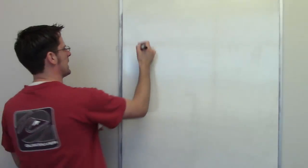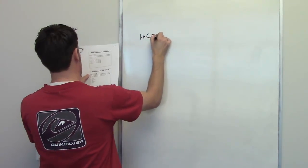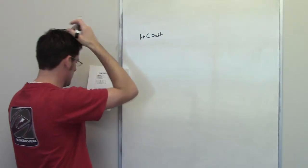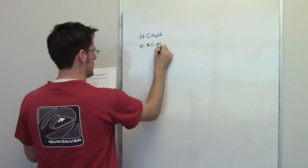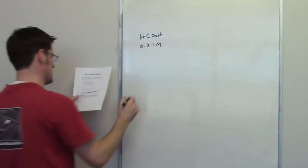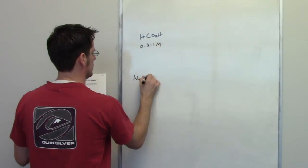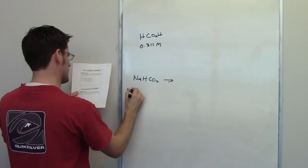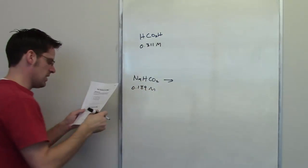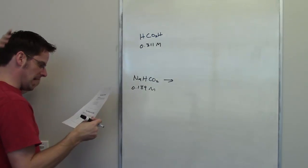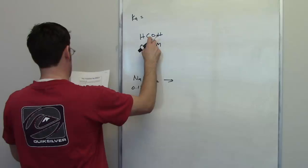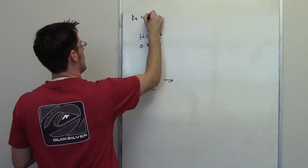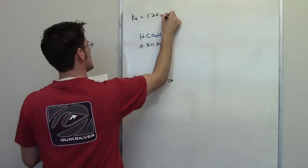This question involves formic acid, another weak acid, and it tells us that this solution is 0.311 molar in formic acid. It says separately that we also have sodium formate, and it tells us the concentration of that is 0.189 molar. It then asks us to calculate the final pH of this solution, and it gives us the Ka value of formic acid as being 1.77 times 10 to the negative fourth.